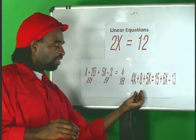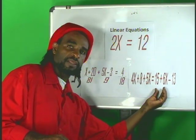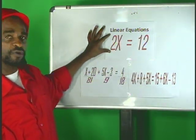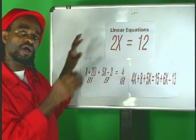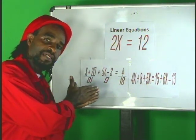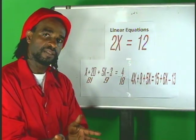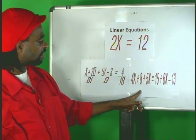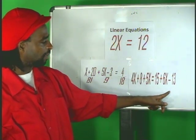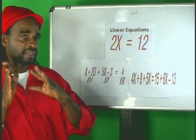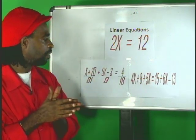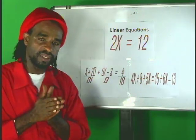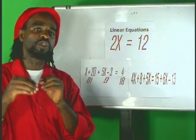Notice, if 3x is equal to minus 6, it takes you back to the first example where we have one quantity on the left hand side and one quantity on the right hand side. So, if 3x is equal to minus 6, then x is equal to minus 6 over 3 and the answer for that is going to be minus 2.